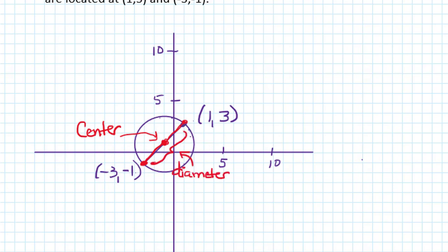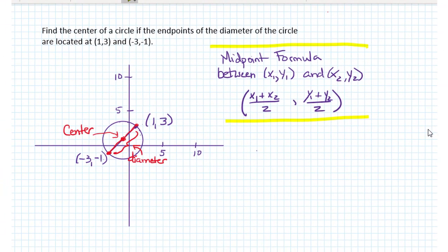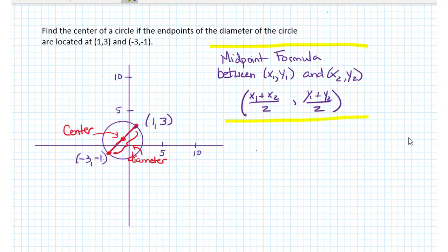So the center of the circle is exactly the midpoint between the two ends of the diameter. The midpoint between the pair of coordinates x1, y1 and the pair of coordinates x2, y2 can be found by adding the x coordinates together, dividing by 2, and adding the y coordinates together and dividing by 2.